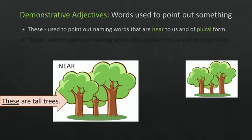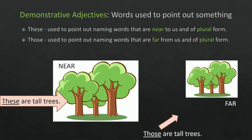In the other image, you can see these trees are away or far from us. So, we write it as those are tall trees. Those is used to point out naming words that are far from us and of plural form.